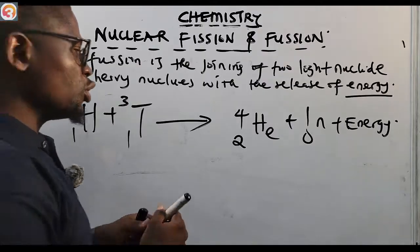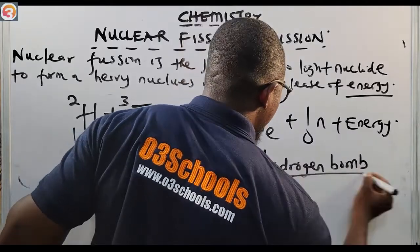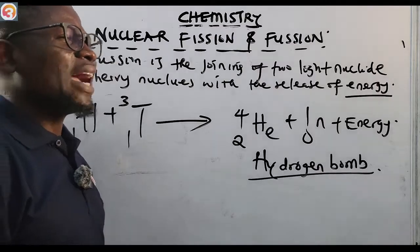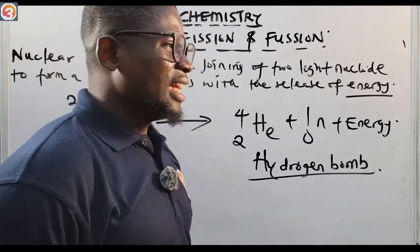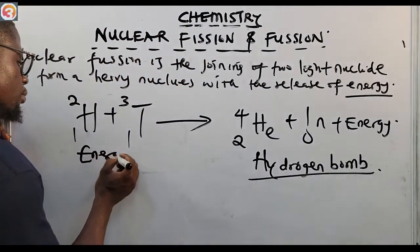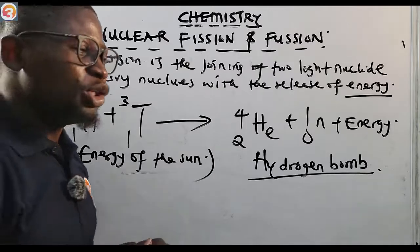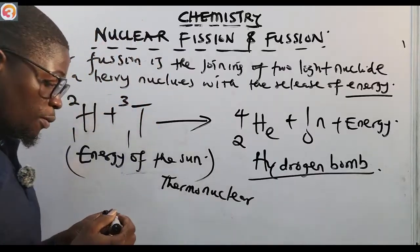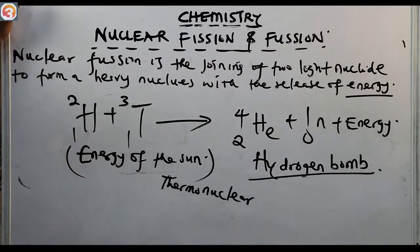Nuclear fusion finds application in the production of the hydrogen bomb. The energy of the sun is also produced by thermonuclear fusion of hydrogen isotopes to form helium nucleus. The sun generates about 660 million metric tons of hydrogen per second and produces about 616 million metric tons of helium nucleus per second — that is the fusion that happens in the sun.